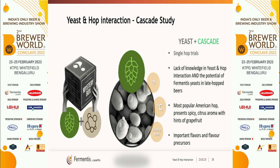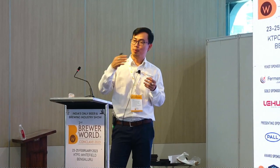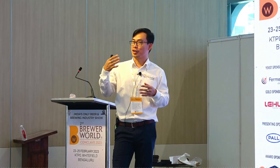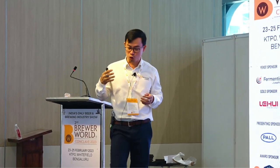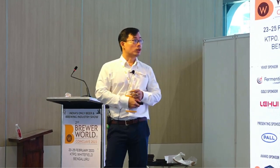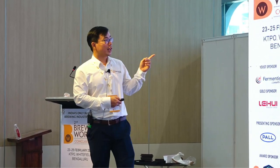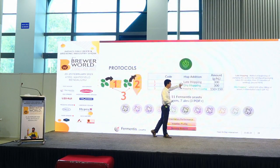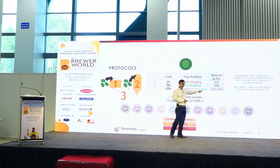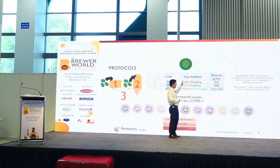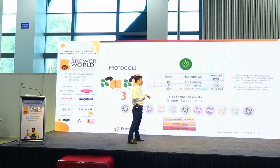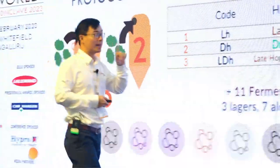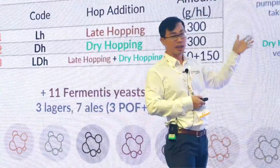Now we go to the cascade study with a more human-feeling approach. Analysis may show high numbers, but what we actually perceive is more important — the harmony, whether we like it or not. Too much of one thing is not always good. We ran trials with different yeast strains checking sensory analysis mainly, and with different types of hopping regimes: late hopping, dry hopping, and whirlpool hop.